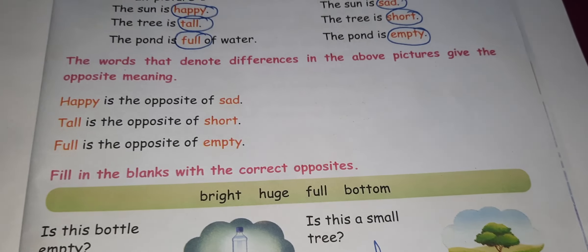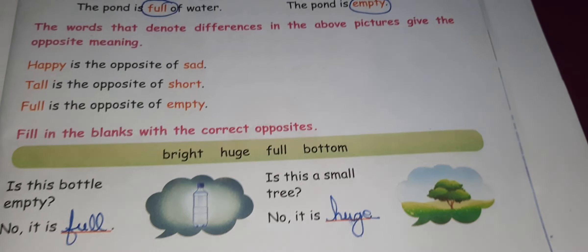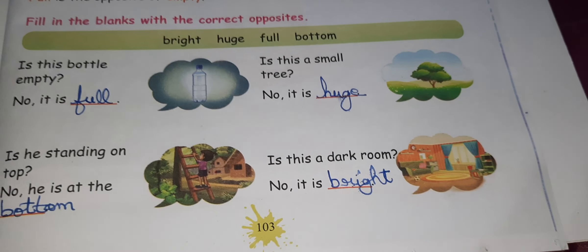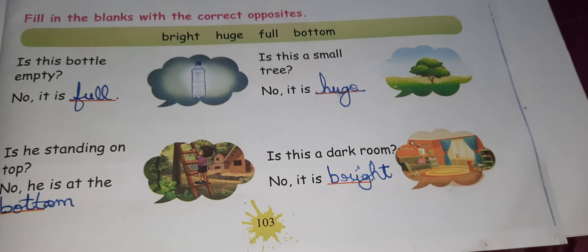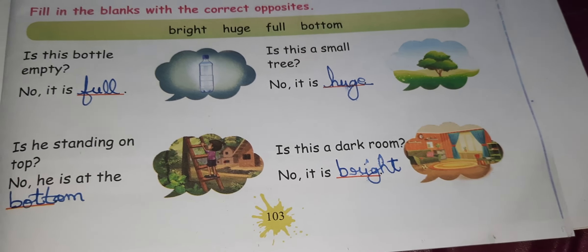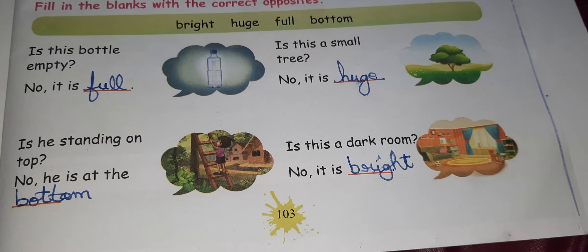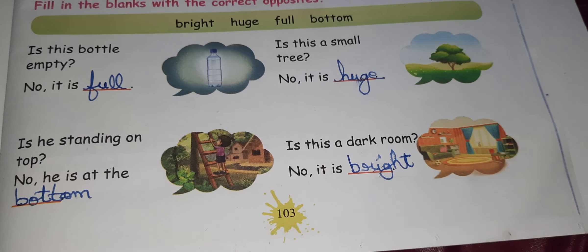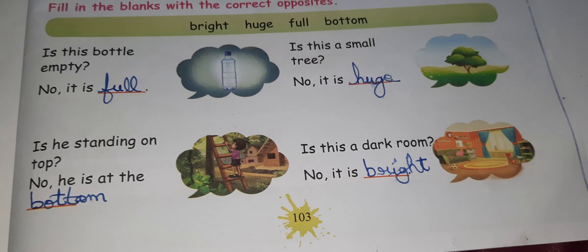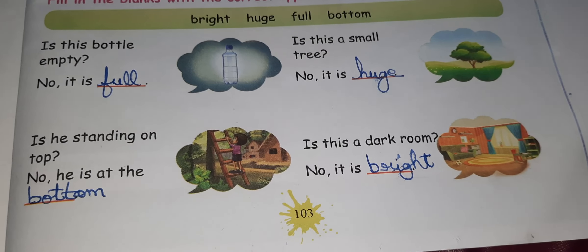You can read the words and I will go for the exercises. 'Is this bottle empty?' 'No, it is full.' 'Is this a small tree?' 'No, it is huge.' 'Is he standing on the top?' 'No, he is at the bottom.' 'Is this a dark room?' 'No, it is bright.' Study well, students. Thank you.